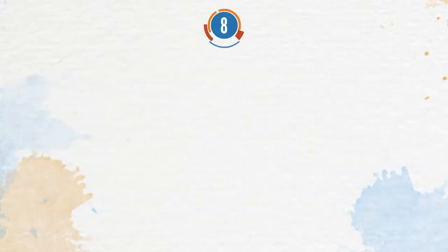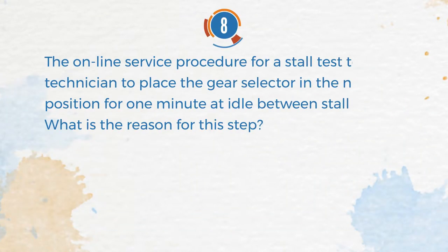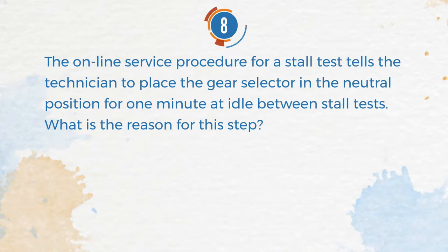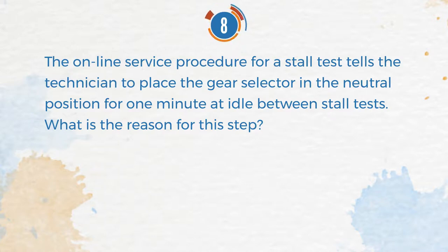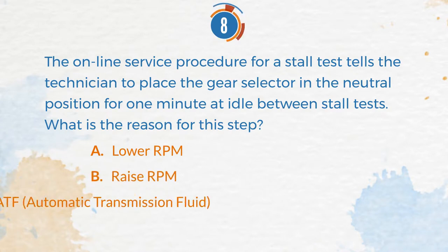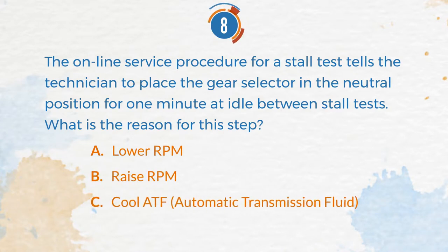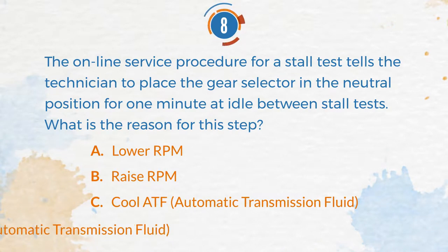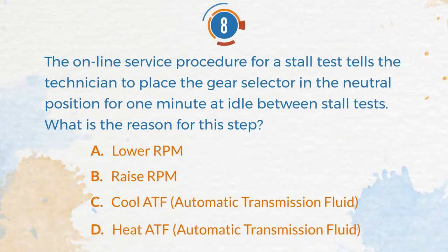Number 8. The online service procedure for a stall test tells the technician to place the gear selector in the neutral position for one minute at idle between stall tests. What is the reason for this step? A. Lower RPM. B. Raise RPM. C. Cool ATF, Automatic Transmission Fluid. D. Heat ATF, Automatic Transmission Fluid.